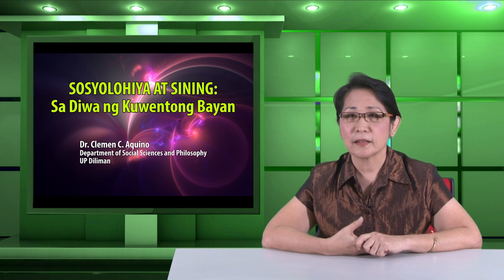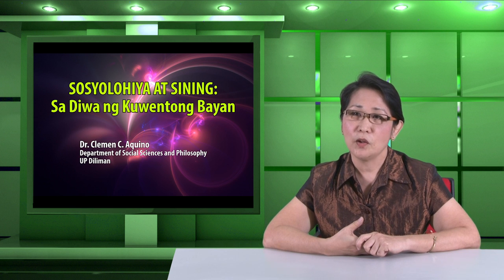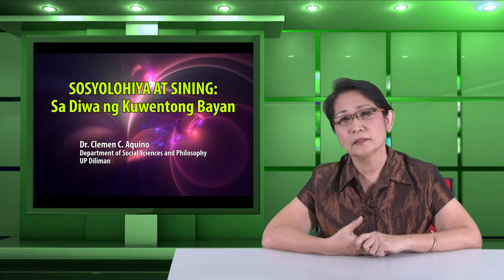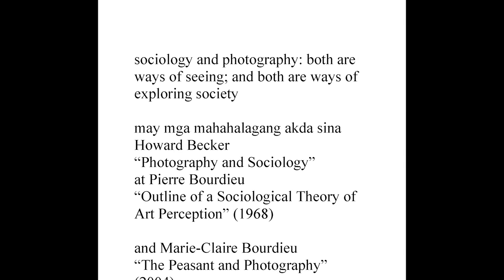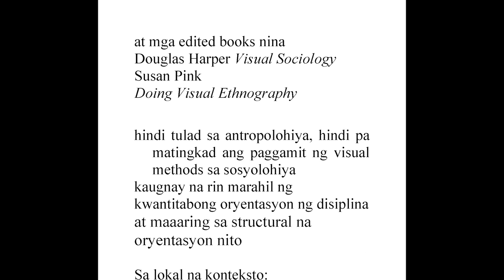Bagaman bunga ng iisang set of historical circumstances ng sosyolohiya at ang photography — halimbawa noong mga 1830s, ang sosyolohiya ni Comte at ang image on a metal plate ay lumabas — may pag-atubili pa rin sa disiplina sa paggamit ng mga larawan. Katakataka marahil yan dahil ang sosyolohiya at photography ay parehong paraan ng pagtingin, both are ways of seeing, both are ways of exploring society. Kahit may mahalagang akda si Howard Becker tulad ng Photography and Sociology, at maging si Pierre Bourdieu, Outline of a Sociological Theory of Art Perception, at The Peasant and Photography, at maraming edited books tungkol sa visual sosyolohiya tulad ng kila Douglas Harper at Susan Pink, hindi tulad sa antropolohiya, hindi pa matingkad ang paggamit ng visual methods sa sosyolohiya.